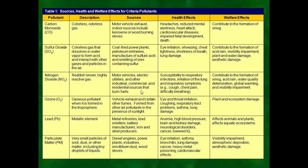This table shows the sources and health and welfare effects of criteria pollutants: carbon monoxide, sulfur dioxide, nitrogen dioxide, ozone, lead, and particulate matter. Carbon monoxide is a colorless, odorless gas obtained from motor vehicle exhaust; indoor sources include kerosene and wood-burning. Its effects include headache, reduced mental alertness, heart attack, cardiovascular disease, impaired fetal development, and death.